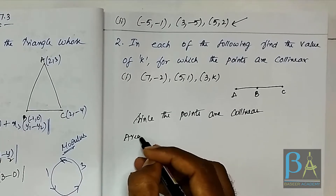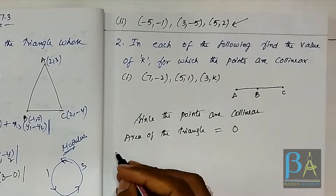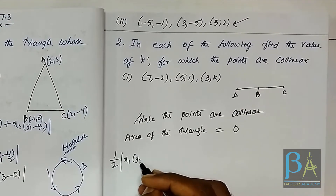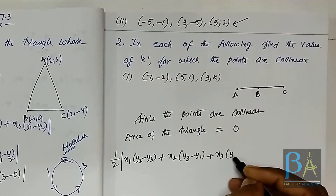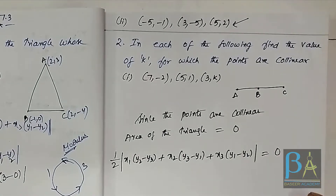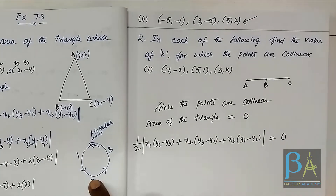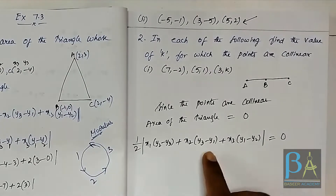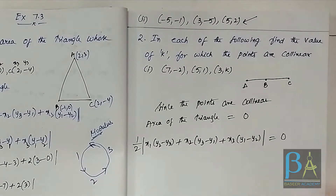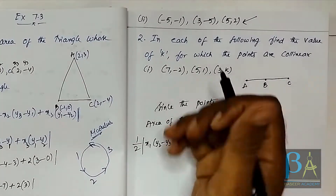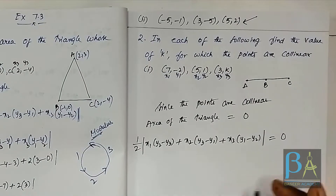Since the points are collinear, area of the triangle equals zero. We use the formula: half mod x1(y2 - y3) + x2(y3 - y1) + x3(y1 - y2) = 0. Using the same mnemonic — after 1 I get 2 and 3, after 2 I get 3 and 1, after 3 I get 1 and 2 — let us substitute the points.